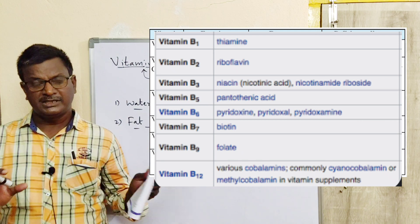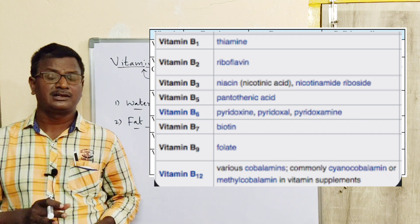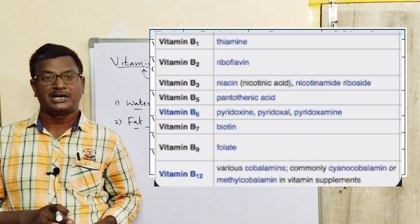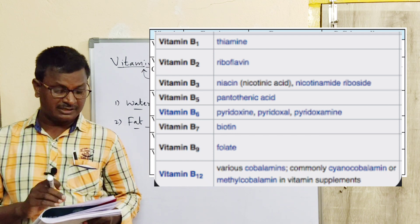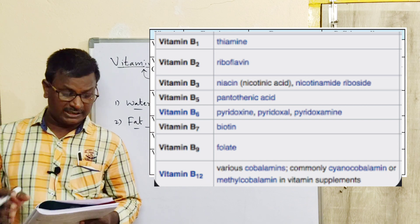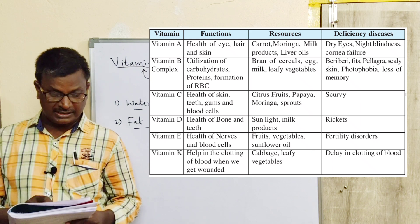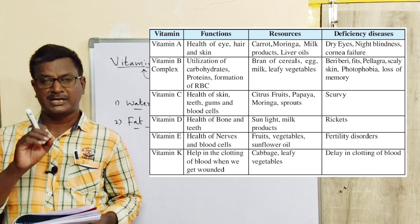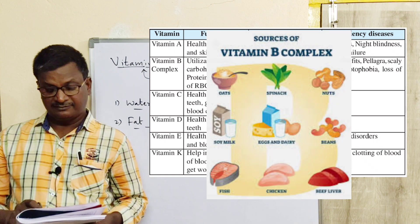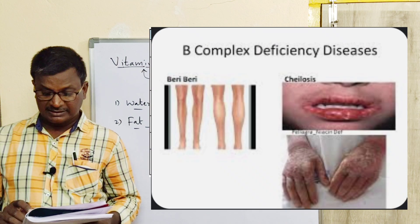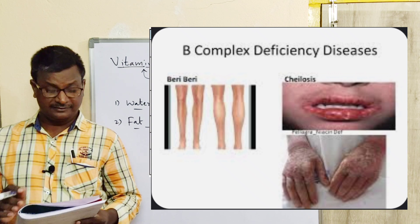Next, vitamin B complex. We call it B complex because it consists of eight types of vitamins: B1, B2, B3, B6, B12, folic acid, niacin, and cyanocobalamin — all combined together and available at the same sources. Functions: utilization of carbohydrates, proteins, and formation of RBC (red blood cells). Sources: bran of cereals, egg, milk, and leafy vegetables. Deficiency diseases: beriberi, pellagra, scaly skin, photophobia, and loss of memory.